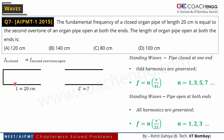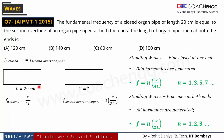We equate: fundamental frequency of closed pipe = second overtone of open pipe. So V/4L = 3V/2L′. The V cancels from both sides: 1/4L = 3/2L′, giving L′ = 4L × 3/2 = 6L. Since the closed pipe length L = 20 cm, the open pipe length L′ = 6 × 20 = 120 cm. So option A was the correct answer.